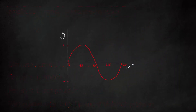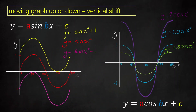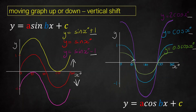Let's look at vertical shifts. Adding or subtracting a number to the end of the function just results in moving the graph up or down depending on whether it's positive or negative. Plus 1 means move it up by 1, minus 1 means move it down by 1. On the other side, when we're not adding or subtracting anything from the function outside of it, you can see it still goes through the axis at the same point — meaning it's not shifting up or down at all. So it's only by adding or subtracting a number on the end that we get a vertical shift.